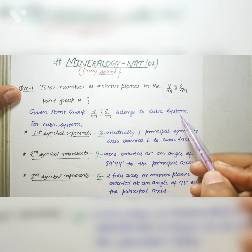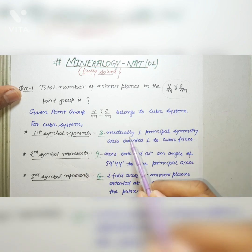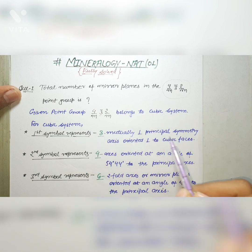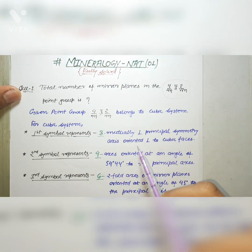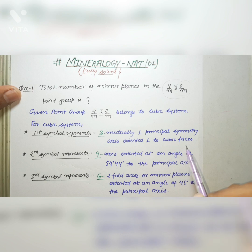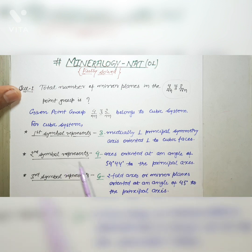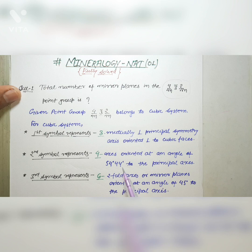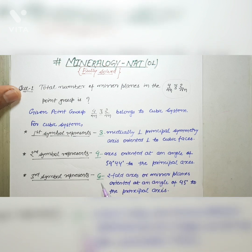For the cubic system, the first symbol represents three mutually perpendicular principal symmetry axes oriented perpendicular to the cubic faces. The second symbol represents four axes oriented at an angle of 54°44' to the principal axis. The third symbol represents six twofold axes or mirror planes oriented at an angle of 45° to the principal axis.